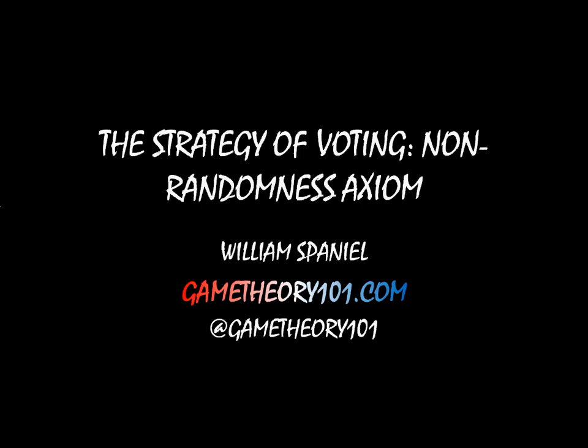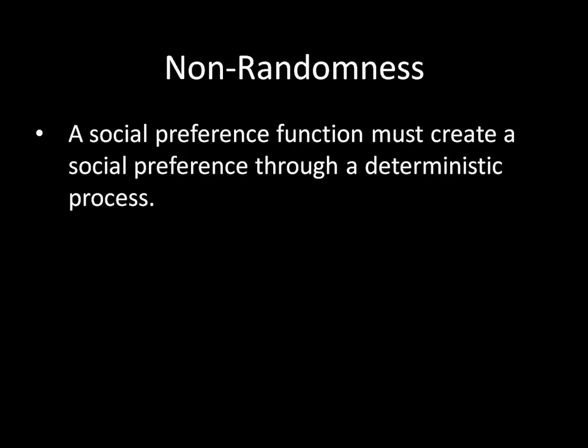Hi, I'm William Spaniel. Welcome back to the Strategy of Voting. Today's topic is the non-randomness axiom. Remember that in this unit we are attempting to create societal preferences from individual preferences, and the way we do that is by using a social preference function. But we want to make sure that our social preference functions fulfill particular rules, or what we call axioms. This is the first axiom we're introducing, the non-randomness axiom. What that tells us is that a social preference function must create social preference through a deterministic process.